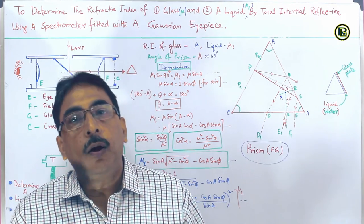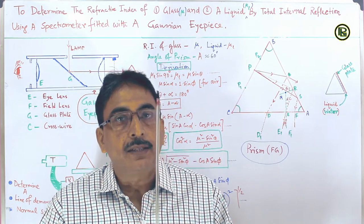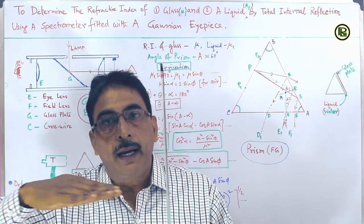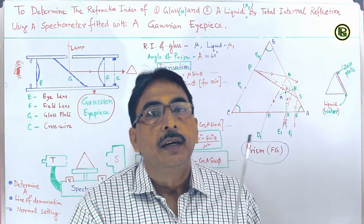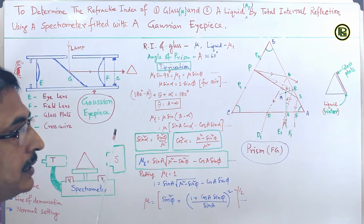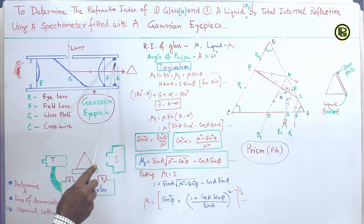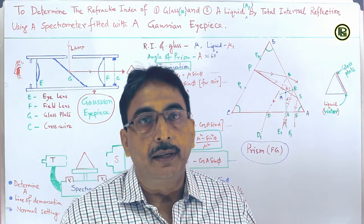The field lens and crosshair is kept towards the prism table of the spectrometer and the image is observed through the eye lens. This eyepiece is used to determine the axis of rotation of the telescope with respect to the optical axis of the spectrometer. The optical axis of the spectrometer should always be vertical with respect to the axis of the telescope and the collimator. This Gaussian eyepiece has the advantage of perfect alignment to take readings more accurately.